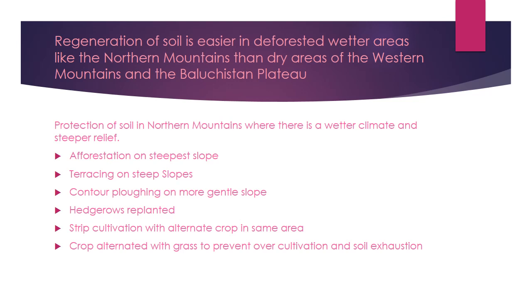Regeneration of soil is easier in deforested, wetter areas like the northern mountains than in dry areas of the western mountains and Balochistan plateau. In the northern mountains, where there is a better climate and steeper relief, the following methods are being practiced. First is afforestation on the steepest slopes — afforestation means growing new plants and more forestation. Then terracing on steep slopes, where we need to develop steps to conserve soil in these areas.